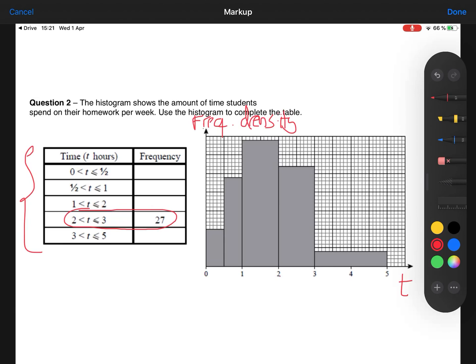That one there. That has got a width of one because from two to three the difference is one. It's got a width of one and the area has to be 27 because in a histogram the frequency is the area of each bar.